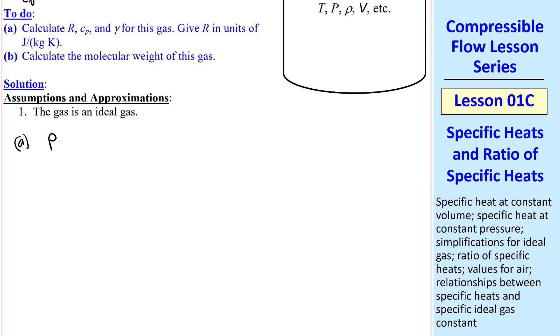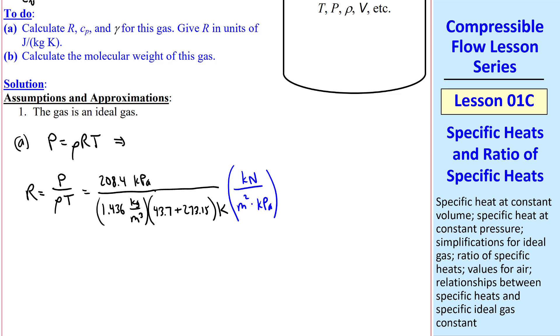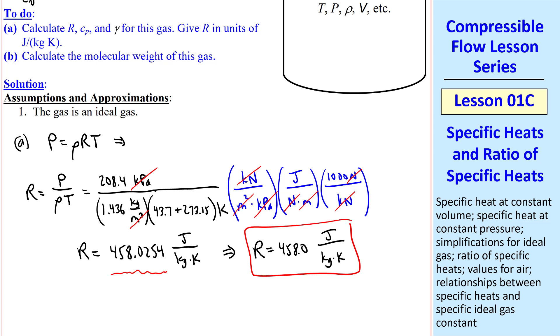For part A, we use the ideal gas equation, P equal rho RT, and we want to solve for R, P over rho T. Well, we were given the pressure, and the density, and the temperature is given in degrees C. But you must always convert to Kelvin by adding 273.15. And then we have unity conversion factors. So I'm going to move this down so that I can fit these. A kilonewton per meter squared is a kPa. A joule is a newton meter, and there's a thousand newtons per kilonewton. You can see that many of these units cancel, leaving us with R equal 458.0254 joule per kilogram K. But the best I can do is four digits, so I give my final answer as 458.0 joule per kilogram K. But I keep all these digits from my calculator when I need to use R in other equations.